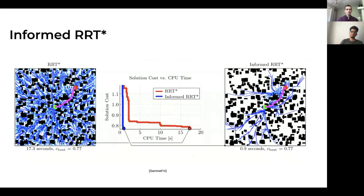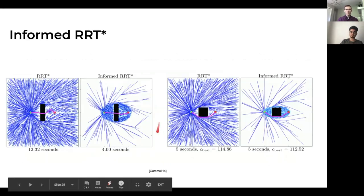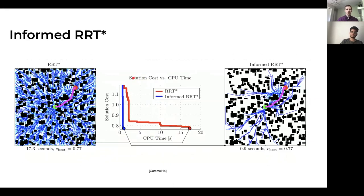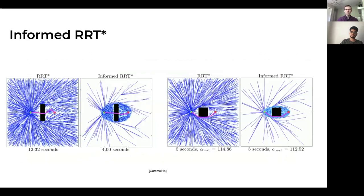Comparing normal RRT* versus Informed RRT* on a CPU time versus solution cost graph, you can see Informed RRT* essentially plummets in solution cost whereas RRT* takes a long time to find a comparable cost solution. In a side-by-side comparison with a narrow passageway obstacle, finding the optimal passage took RRT* 12.3 seconds versus only 4 seconds for Informed RRT*. In another case trying to hug around an obstacle, Informed RRT* focuses in much faster.